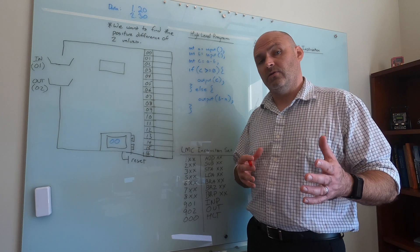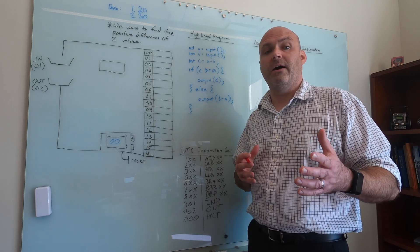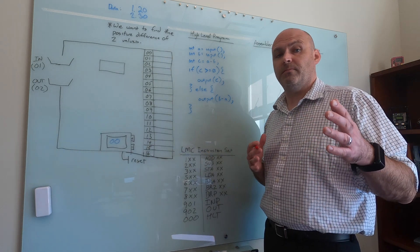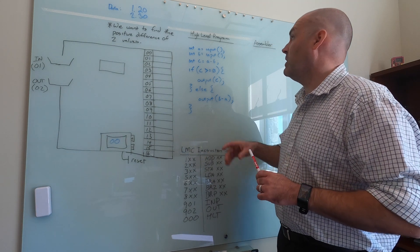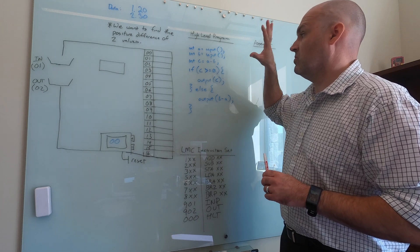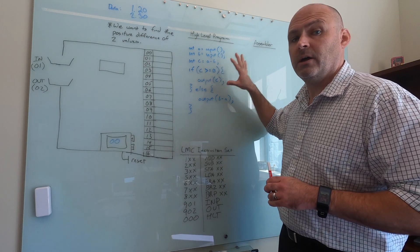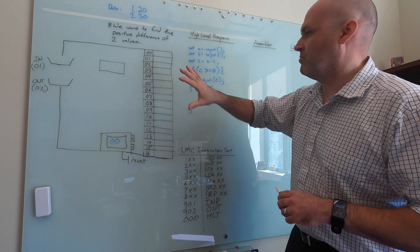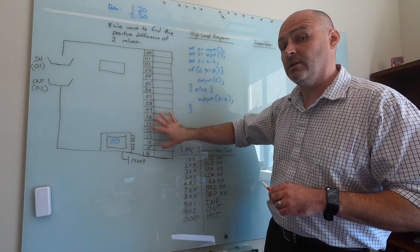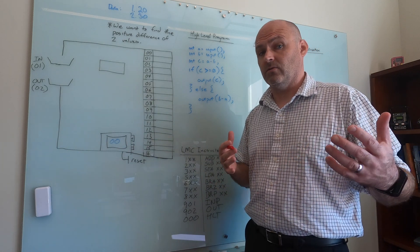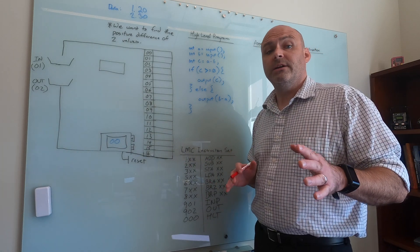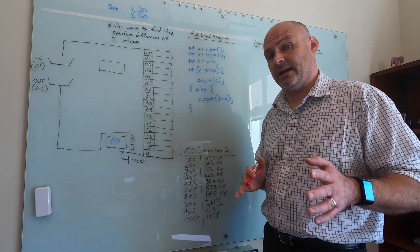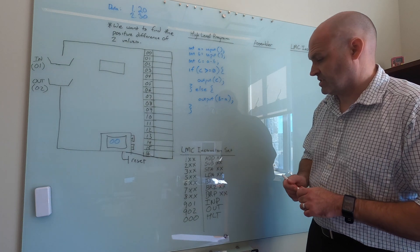This video is going to introduce branching so that we can move from instruction to instruction and around data. We're also going to spend time looking at how we compile and what it looks like to go from a high-level program to assembler, then assemble into machine instructions, have those loaded into memory, and have the computer execute the program. We'll start by looking at the additions to the Little Man instruction set for this video — the branching instructions.